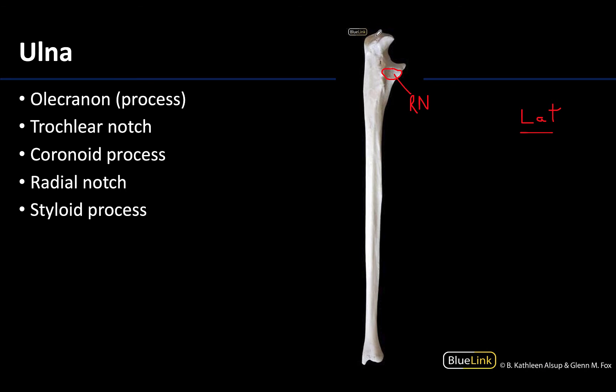This right here is the olecranon, or olecranon process, which always projects proximally — it is that point of the elbow you can easily palpate on the back of your own elbow. That robust region is where the triceps brachii muscle tendon attaches for its distal attachment.